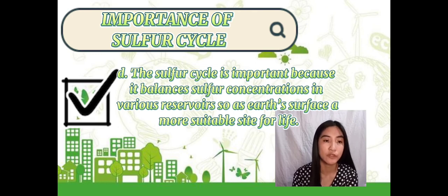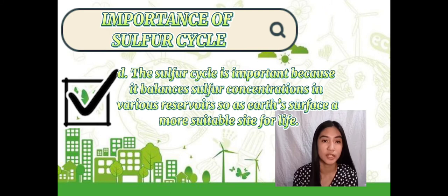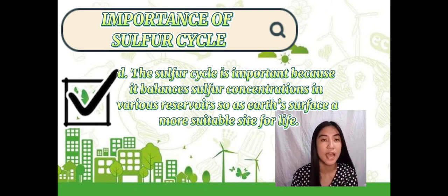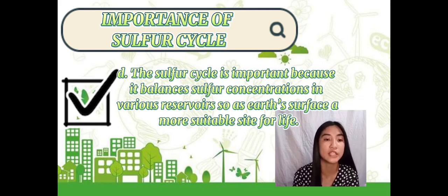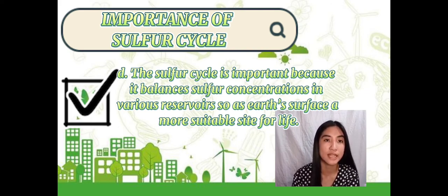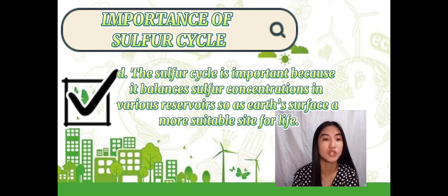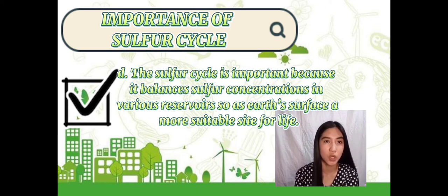Plants and algae absorb sulfur as sulfate from the soil or the ocean. It is used to create two of the necessary amino acids for protein synthesis. Sulfur is a necessary element that is found in protein molecules and acids. Therefore, knowledge of the sulfur cycle facilitates knowledge of organisms and their functions. That's all. Thank you for taking the time.